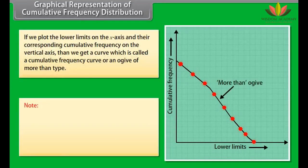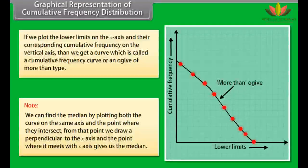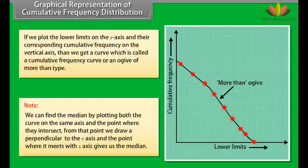Note: We can find the median by plotting both curves (less than and more than type) on the same axis. The point where they intersect gives the median — from that point, we draw a perpendicular to the x-axis, and where it meets the x-axis is the median.